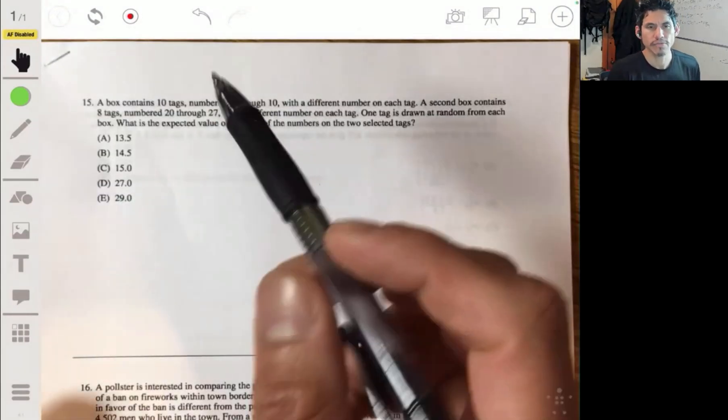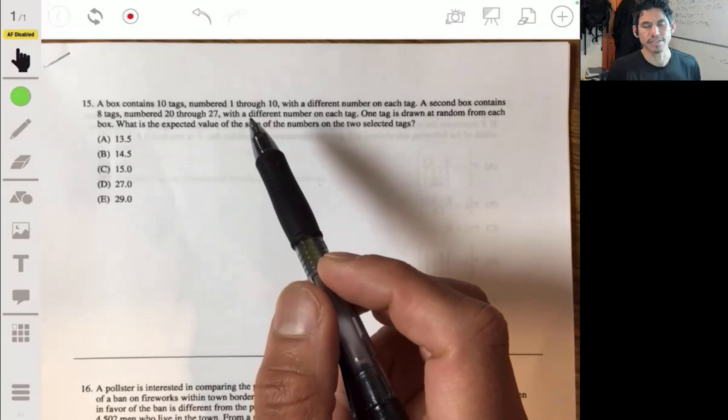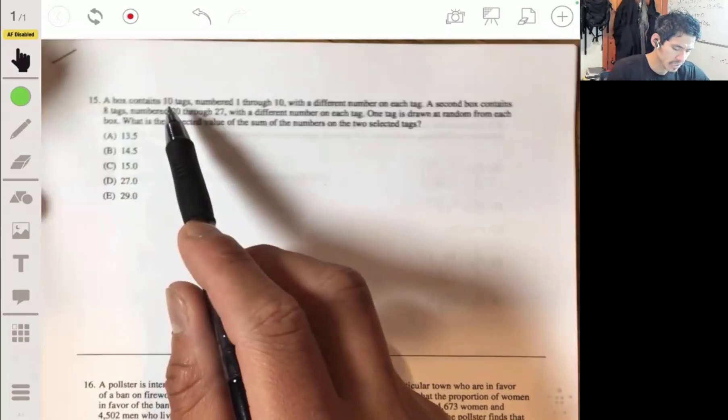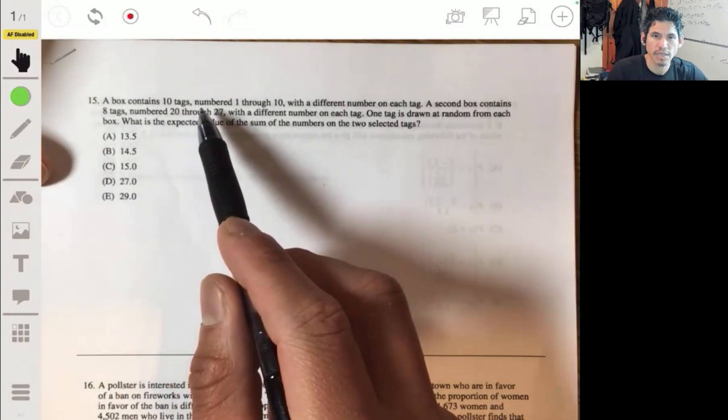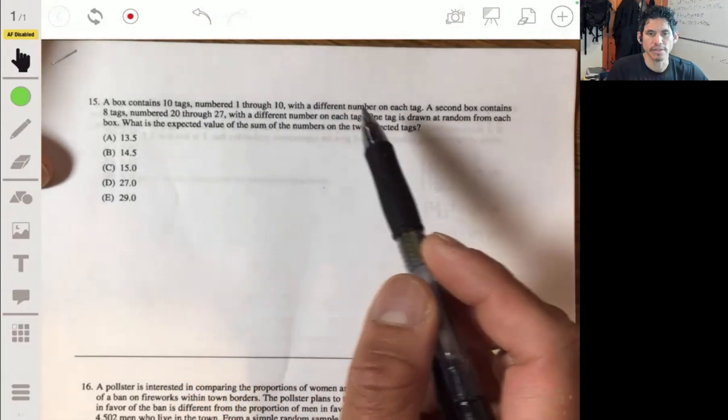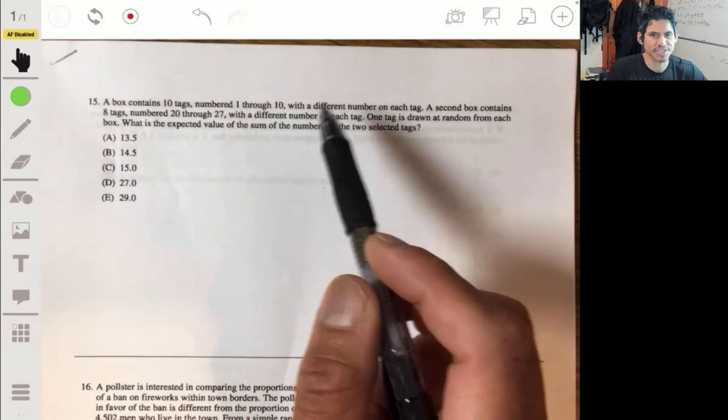Alright, picking up on problem 15 from AP Statistics 2017 practice exam. We have a box that contains 10 tags, numbered 1 through 10, with a different number on each tag.